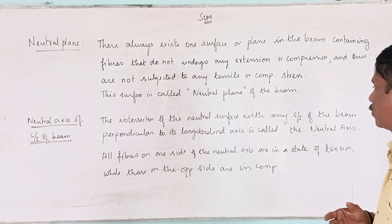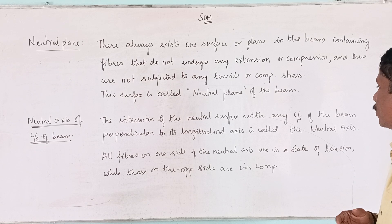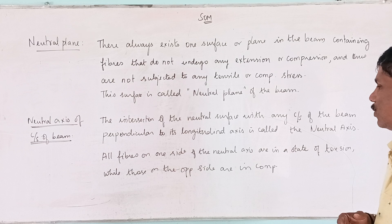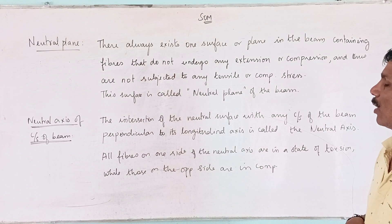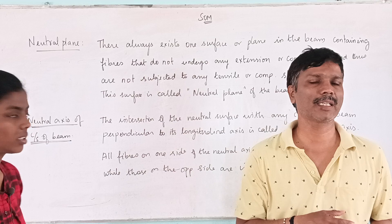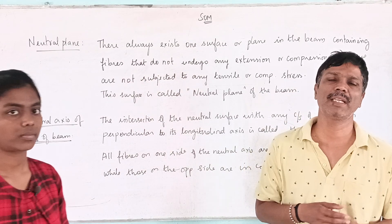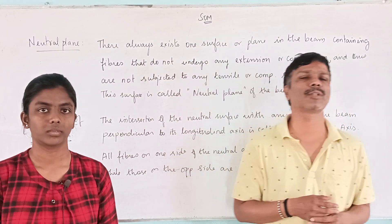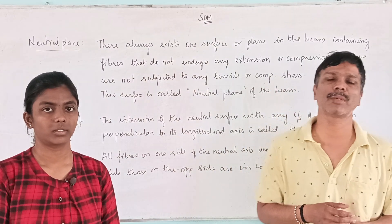All fibers on one side of the neutral axis are in a state of tension, while those on the opposite side are in compression. At the neutral axis itself, there is neither tension nor compression. If you have the neutral plane, you can determine the neutral axis.